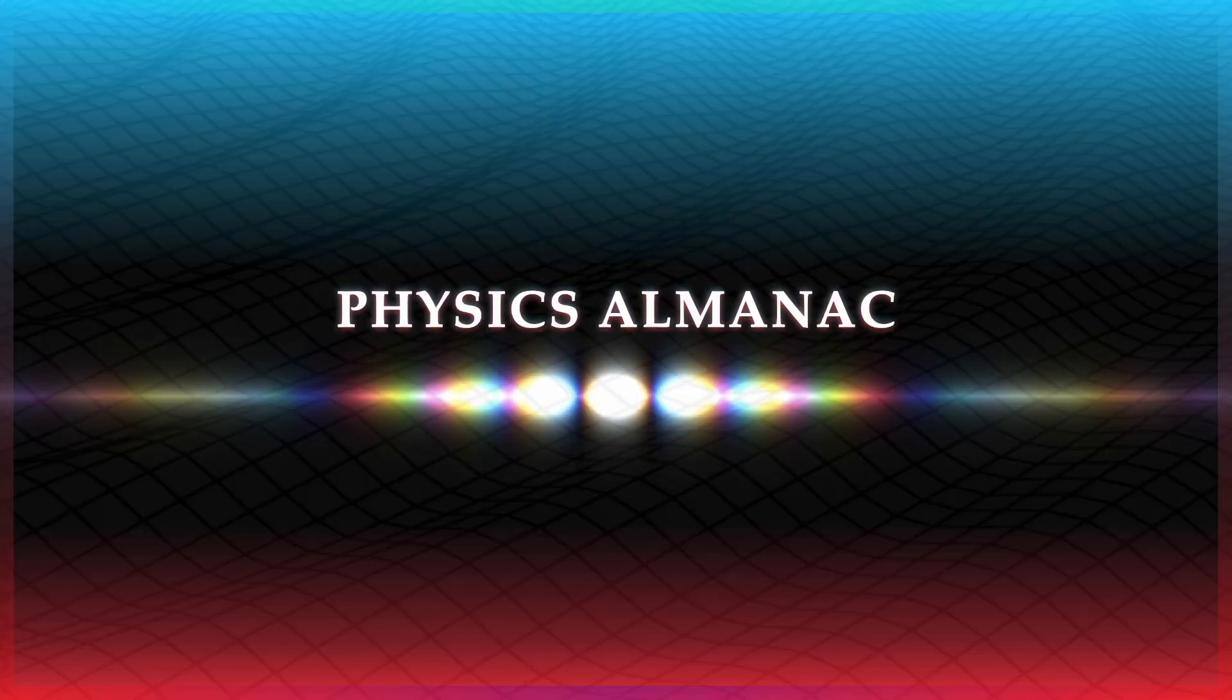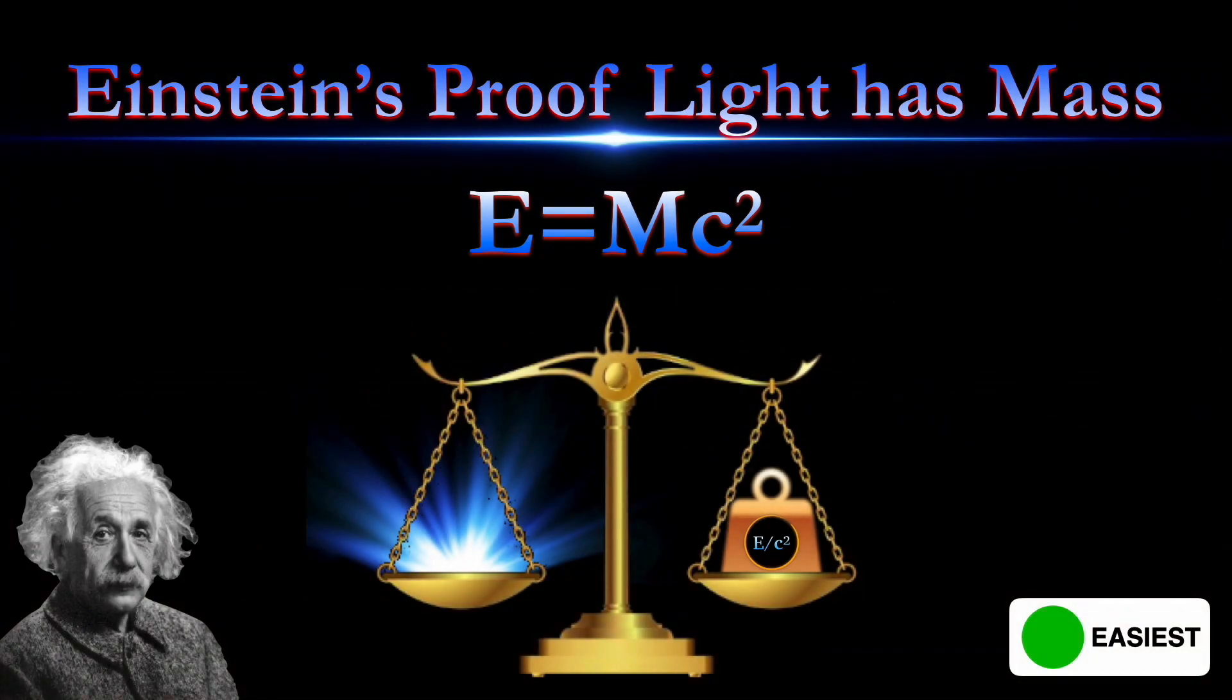For more physics-related videos, please subscribe. In this video I'm going to go over Einstein's proof that light has mass, which turns out is his original derivation of his famous equation E equals mc squared. I've rated the physics level in this video as easiest.